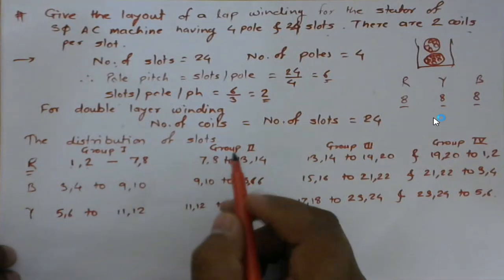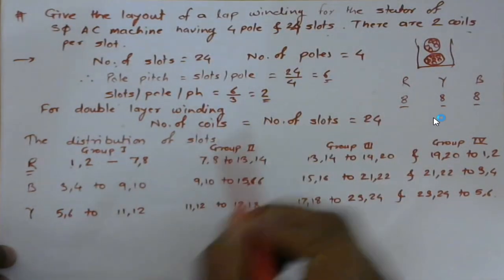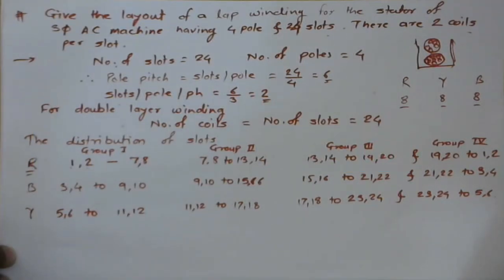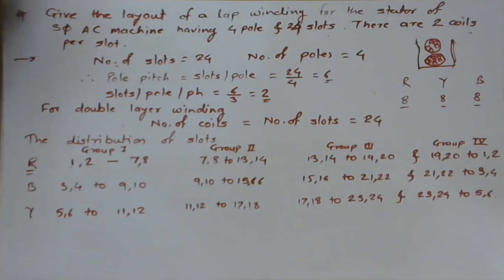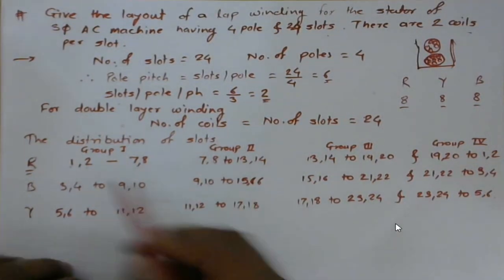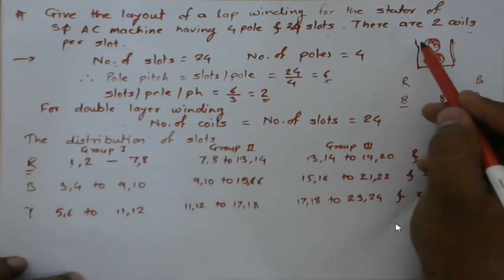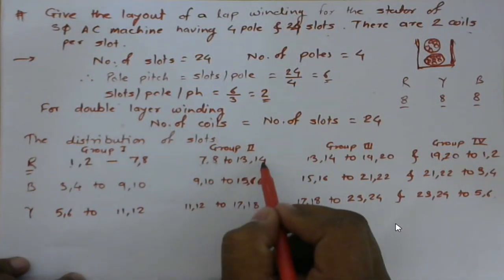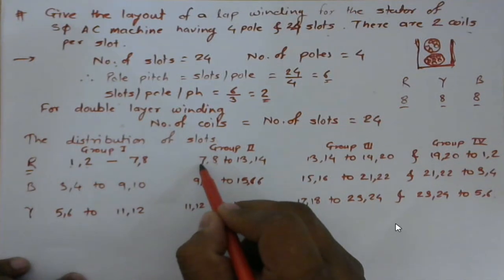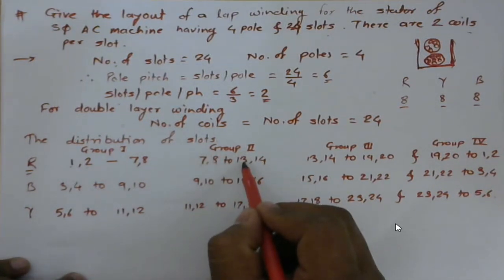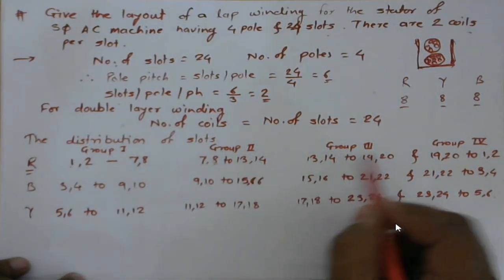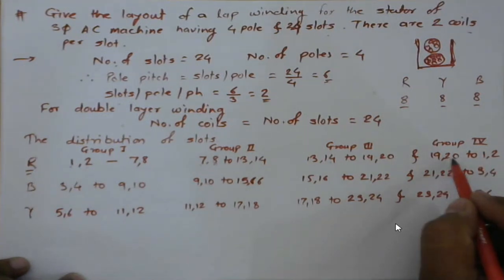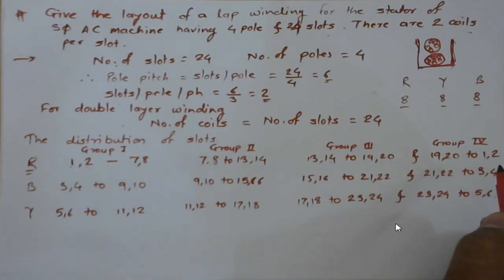Since it is a two-layer winding, each slot contains two coil sides. Group 2 starts from slots 7 and 8: one coil goes from 7 to 13, and the next from 8 to 14. Group 3 goes from 13 to 19 and 14 to 20. Group 4 goes from 19 to 1 and 20 to 2.